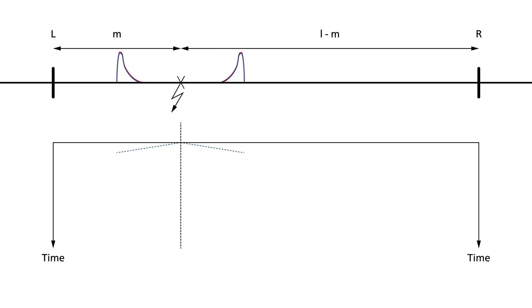Relays that measure travelling waves are the latest advancement in power system protection. By precisely measuring the arrival time of the travelling wave, they can trip faster than ever before.